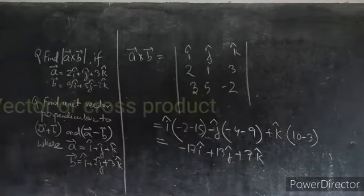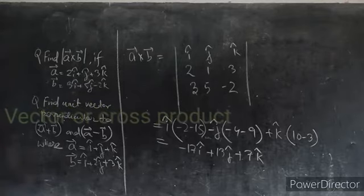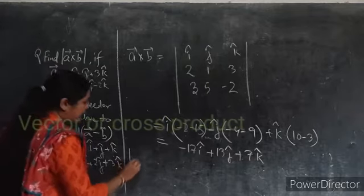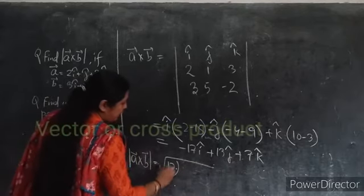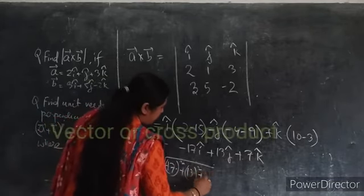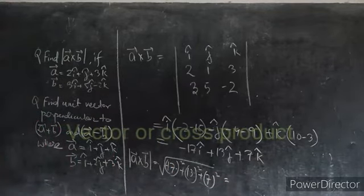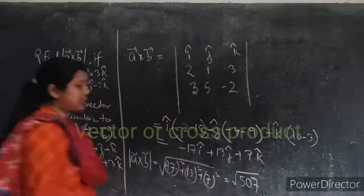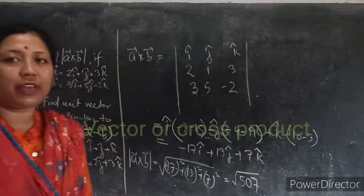So this is the value of A cross B, that is minus 17i cap plus 13j cap plus 7k cap. Now this question asks you to find the magnitude. When finding the magnitude, we write root over of (−17)² plus 13² plus 7², and if you calculate, you will get the value to be root 507. In this way we do the cross product between two given vectors.